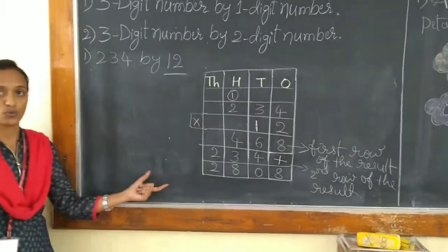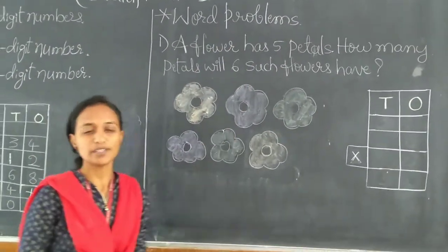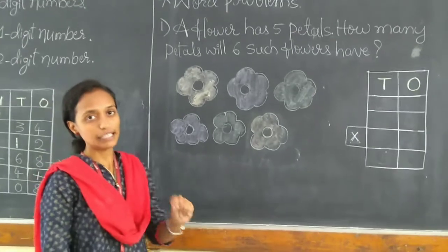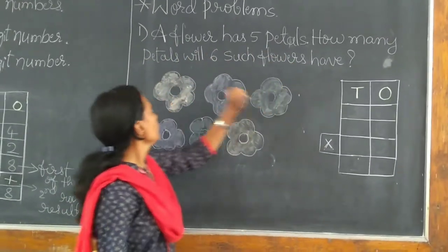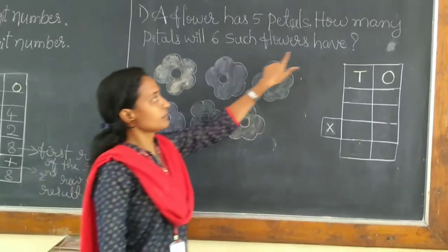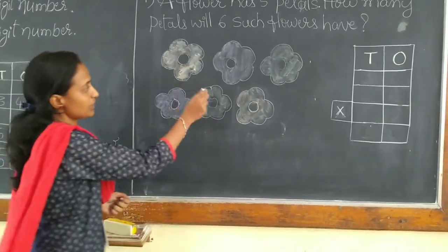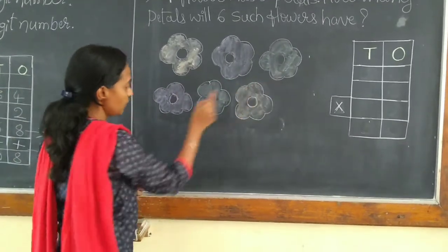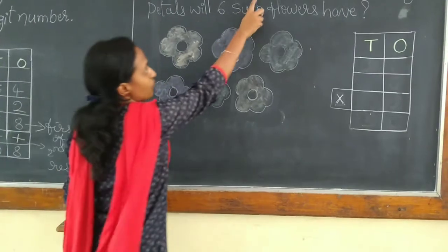Hope I am clear to you. Let us solve word problems on multiplication. How multiplication is helpful in our daily life. A flower has 5 petals. How many petals will 6 such flowers have? What is the given data here? They have given 6 flowers. 1, 2, 3, 4, 5, 6.